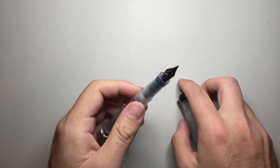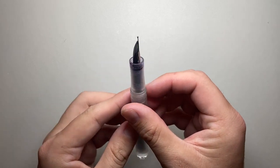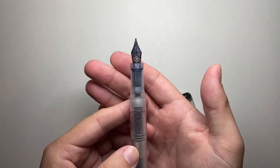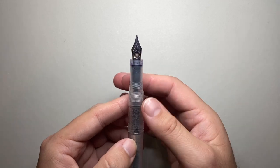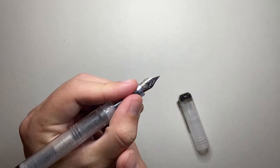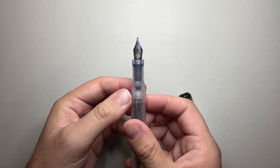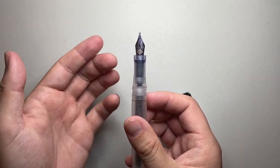And that is that the nib is recessed in there. Now, from an aesthetic point of view, I think it's nice to have the nib on display. I understand why they've done that for a nice long section, and it gives a nice shape to the section, so the writing experience is nice.